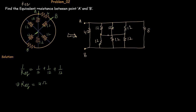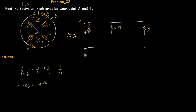Now let's replace those two groups of three resistors with their equivalents. The equivalent of the first group is 4 ohms and the equivalent of the second group is also 4 ohms, both connected through the center point. These two 4 ohm resistors are in series, so their combined equivalent resistance R = 4 + 4 = 8 ohms.